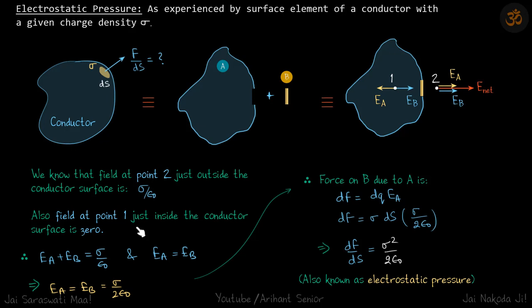From these conditions we get two equations. Outside: E_A plus E_B equals sigma by epsilon. Inside: E_A equals E_B. Solving these gives E_A equals E_B equals sigma by two epsilon, which is an interesting result.